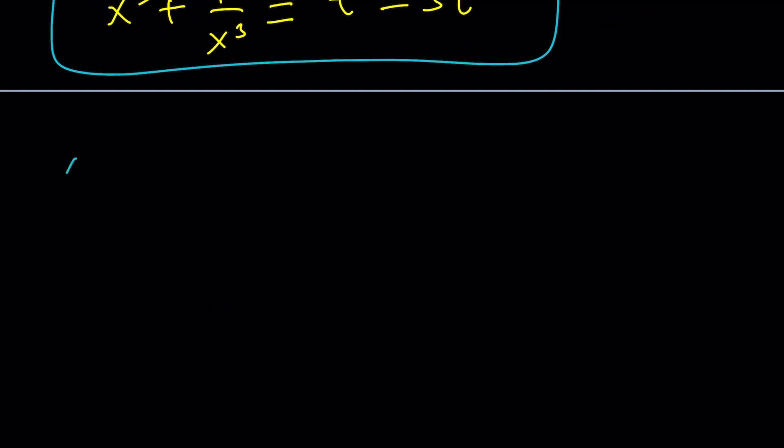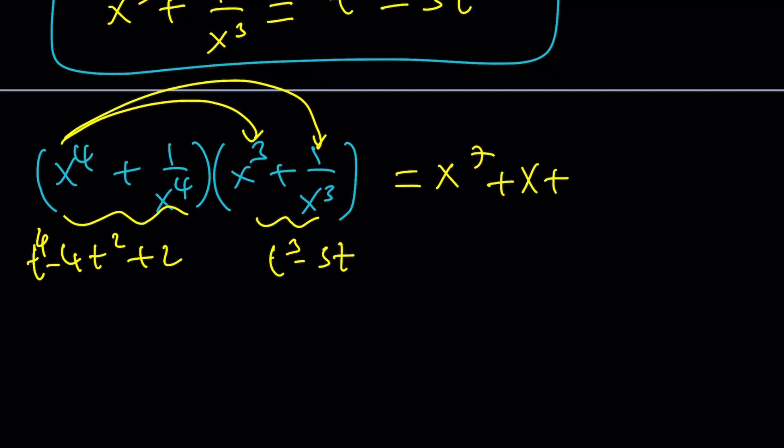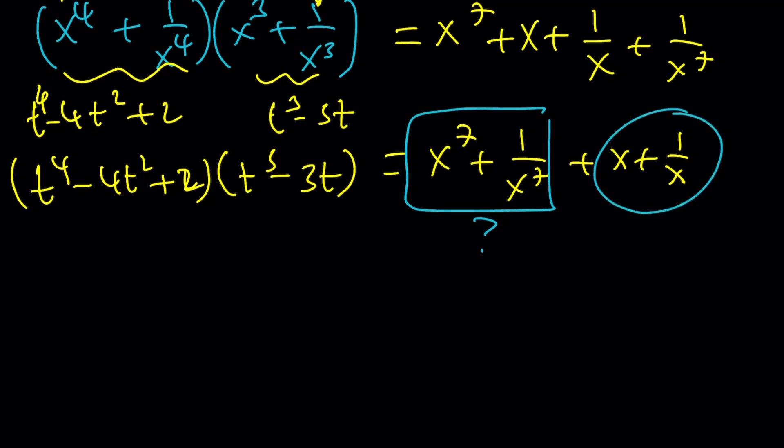This is going to give me x cubed plus 1 over x cubed. There's an identity I use, which is a cubed plus b cubed plus 3ab times the quantity a plus b. So 3ab is just going to be 3, and then x plus 1 over x equals t cubed. This is the same thing as t. From here, we can isolate x cubed plus 1 over x cubed as t cubed minus 3t. We have the sum of cubes, the sum of fourth powers. Guess what we're going to do? We're going to multiply those.